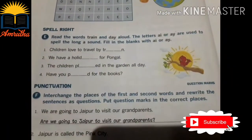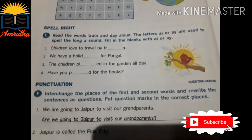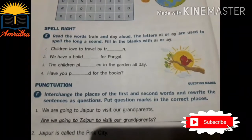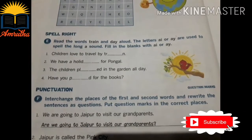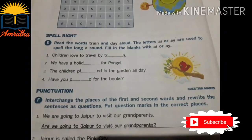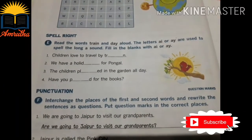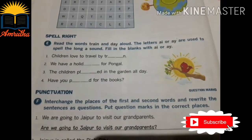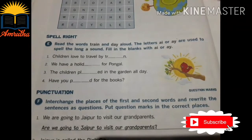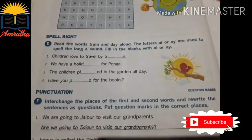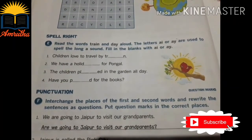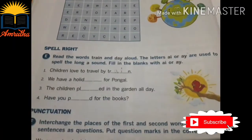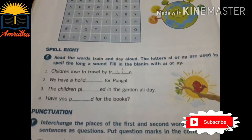That is Spell Right. Read the words: train and day aloud. The words A-I and A-Y are used to spell the long 'a' sound. Fill in the blanks with A-I or A-Y. First one: children love to travel by train. We have to write here A-I: T-R-A-I-N, train.